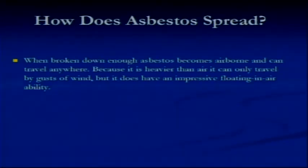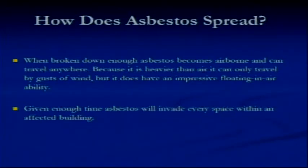How does asbestos spread? When broken down enough, asbestos becomes airborne and can travel anywhere. Because it is heavier than air, it can only travel by gusts of winds, or we'll say puffs of air. But it does have an impressive floating and air ability. If you tear a piece of it down, it is so small it could float for eight hours before it ever actually hits the ground. The air conditioning comes on and it starts blowing it around, and before you know it, it could just completely invade a space within an affected building.